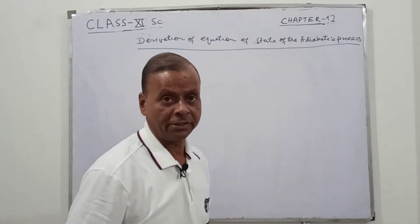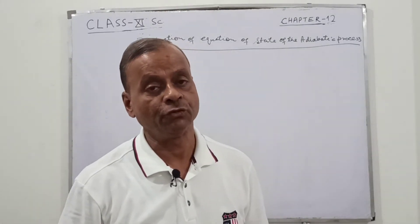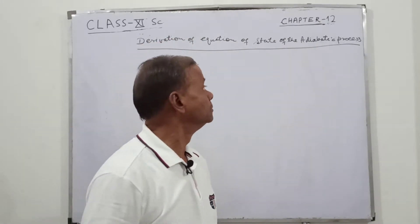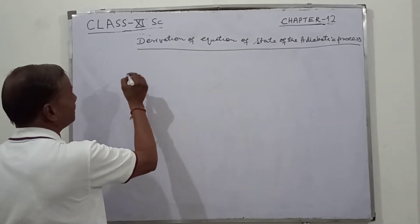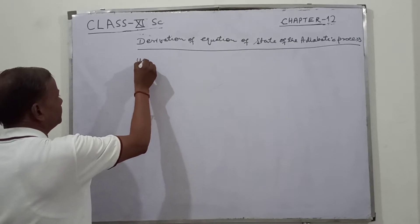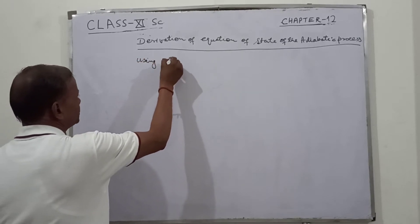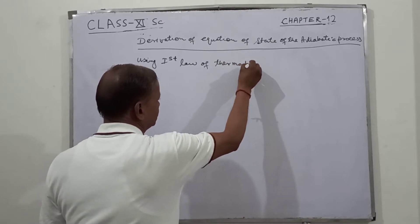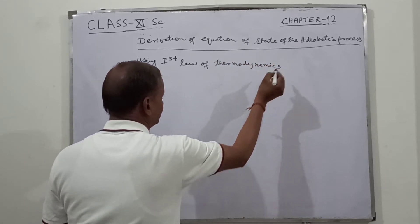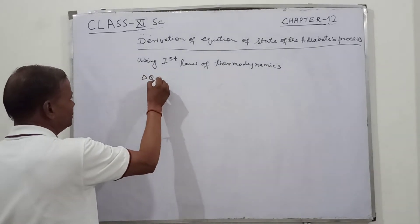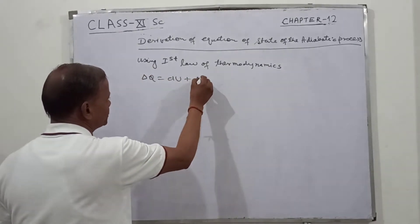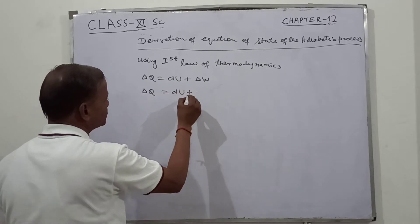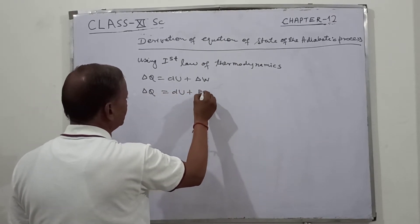In the adiabatic process, there is no exchange of heat — heat is neither given nor taken by the system. Using the first law of thermodynamics: delta Q equals dU plus delta W, or delta Q equals dU plus P delta V.